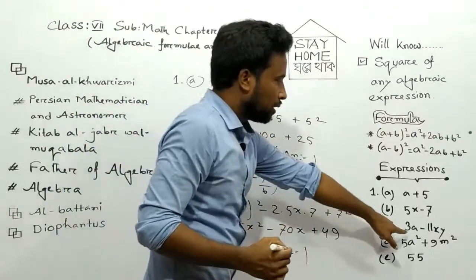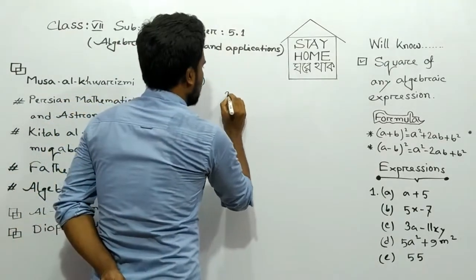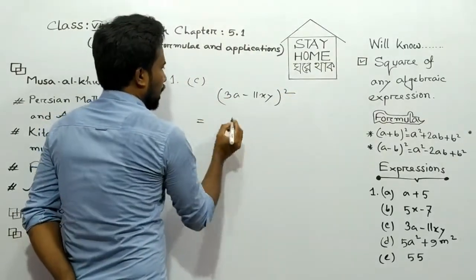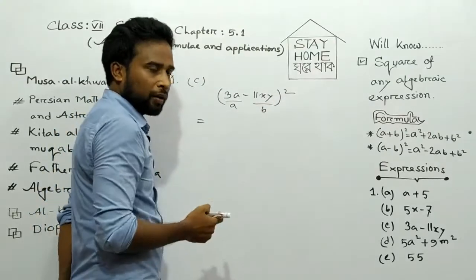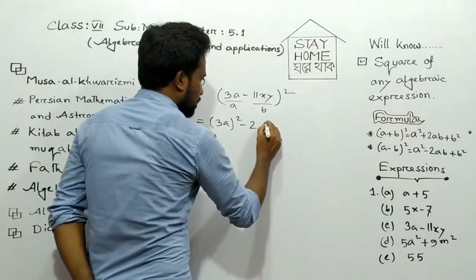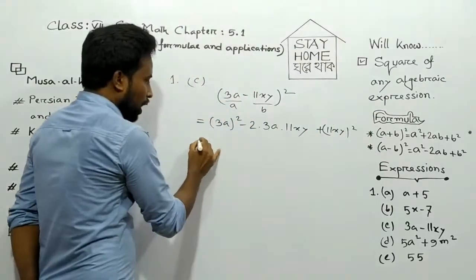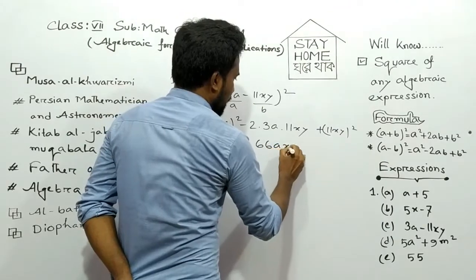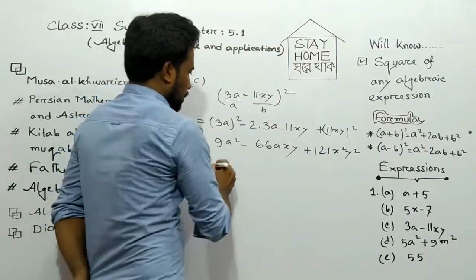Our next expression C is (3a − 11xy). We take the whole square. We can see here 3a is our A and 11xy is our B. So we apply the (A − B)² formula: (3a)² minus 2 into 3a into 11xy plus (11xy)². We can write here 9a² minus 66axy plus 121x²y². This is our answer.